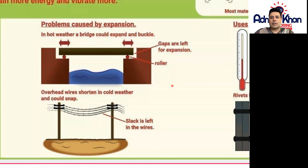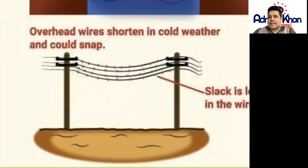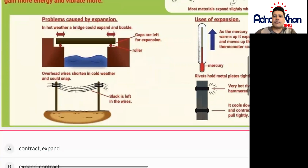Overhead wires shorten in cold weather and could potentially snap. That's a problem that's also caused by expansion and contraction. So slack is left in the wires. If I just blow this up a little bit for you, slack means that small gaps are left within the wires. So if it is cold and if the wires actually do condense in size or they get smaller or shorter, then there is actually room so the wires will not snap.